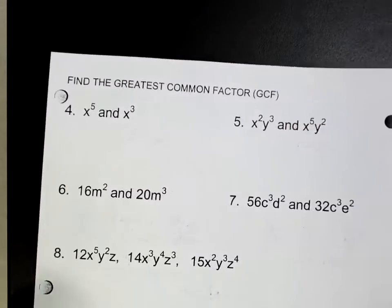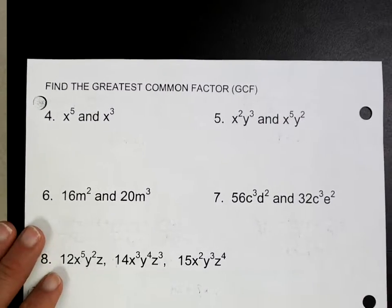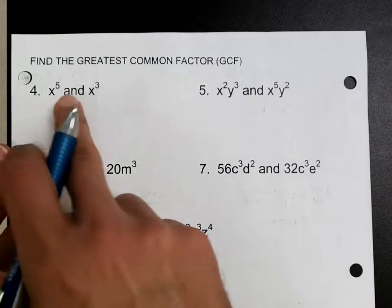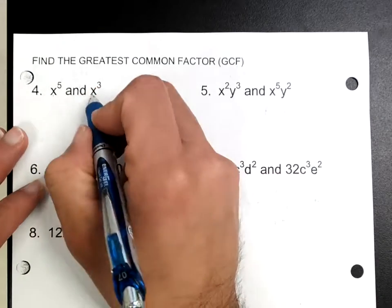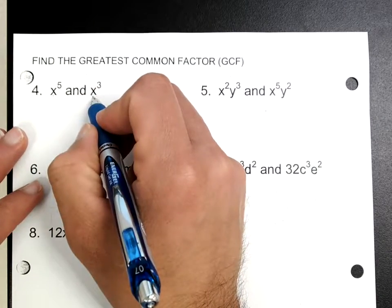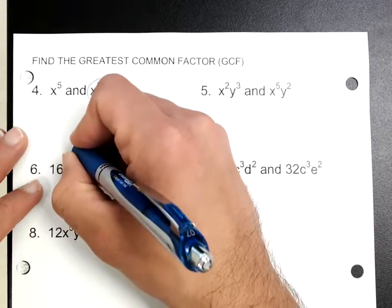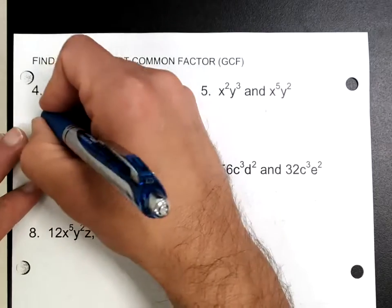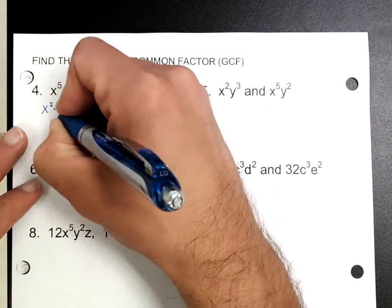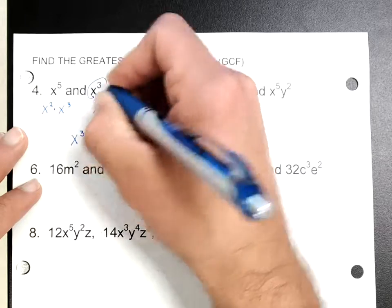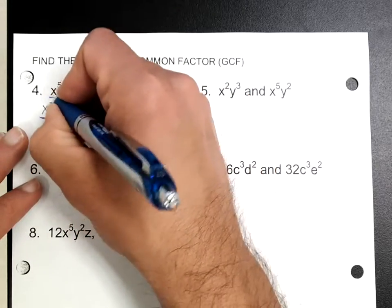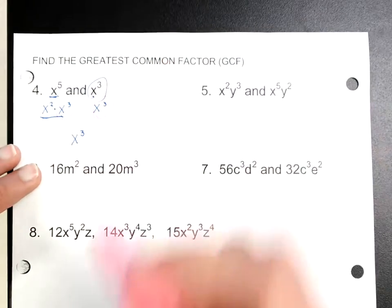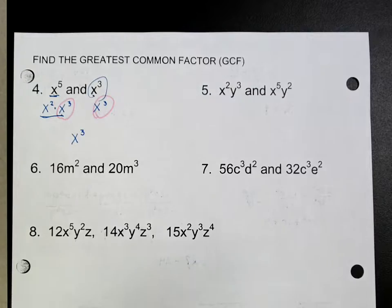Now at the back we're looking for the greatest common factor. The greatest common factor is easier to think about like this — especially if you have x's, that's actually easier. Which one's smaller: x to the fifth or x cubed? Well, x cubed is actually smaller, so my greatest common factor is the smallest one of the two. Another way to look at it: x to the fifth power — what do they have in common? The biggest common factor is that shared piece.